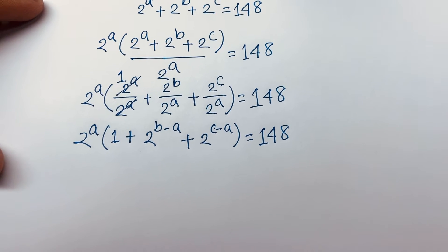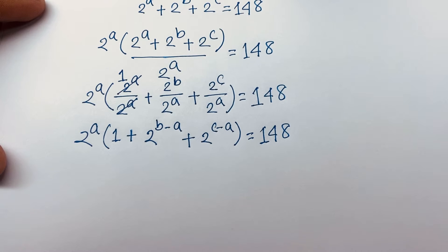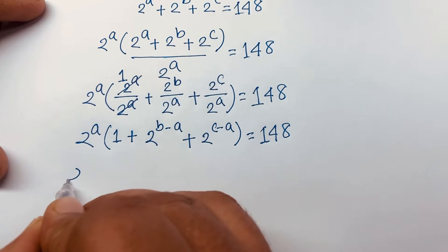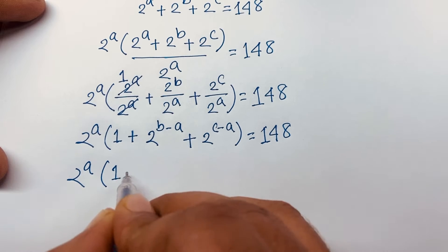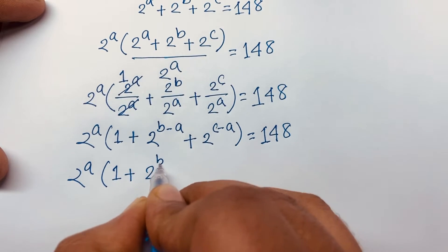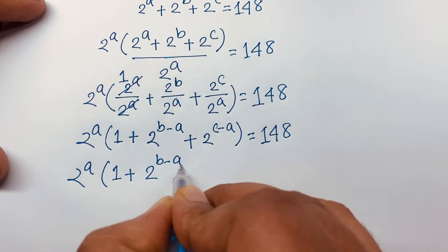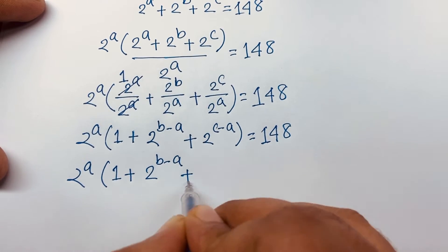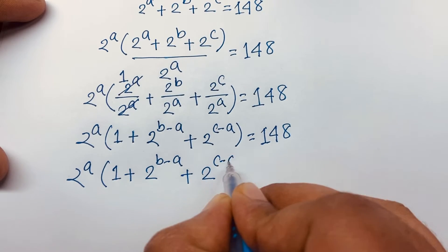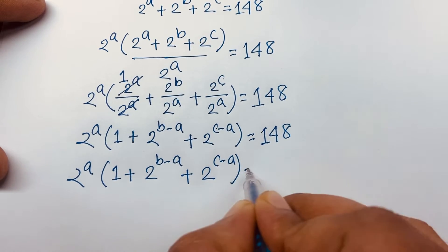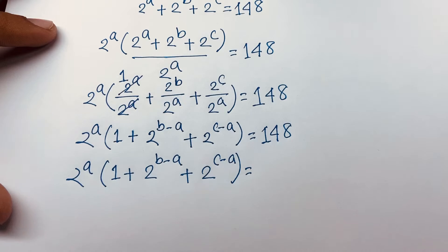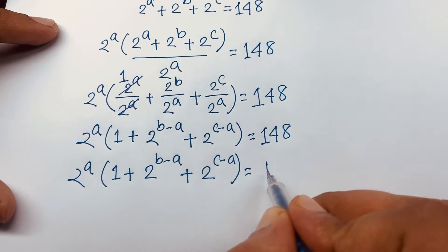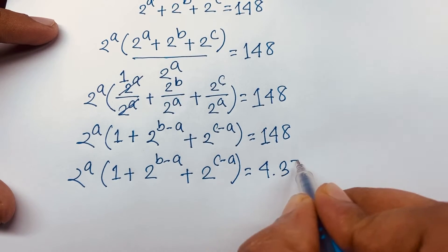We have 2^a times (1 + 2^(b−a) + 2^(c−a)) = 148. Now 148 can be factored as 4 times 37.